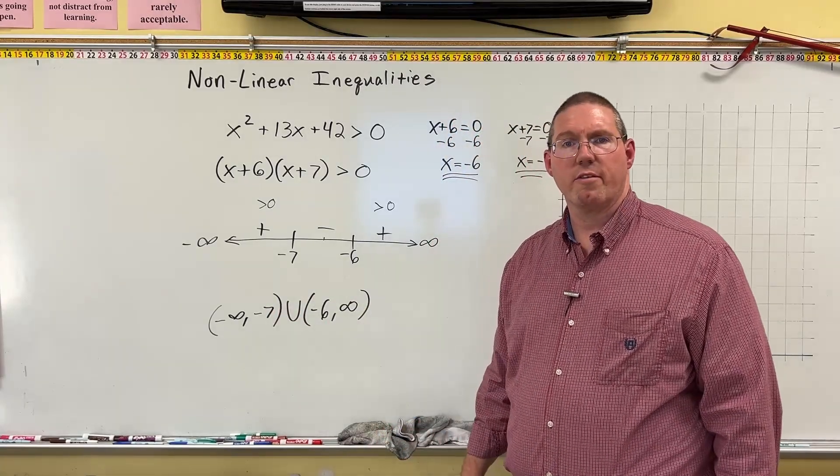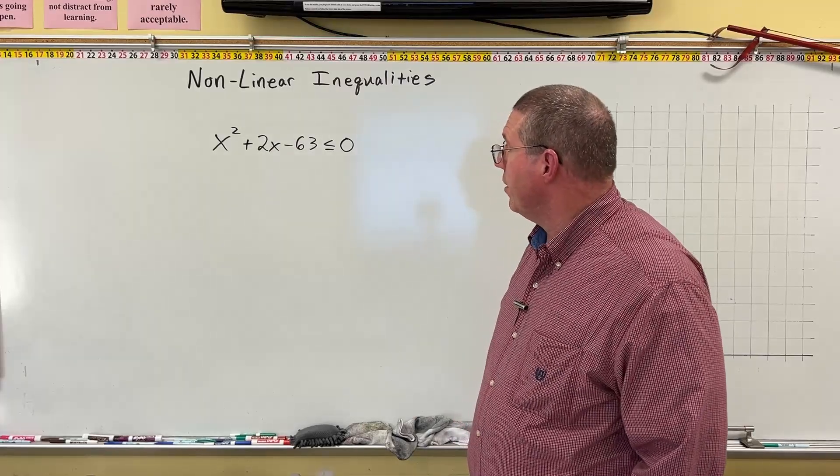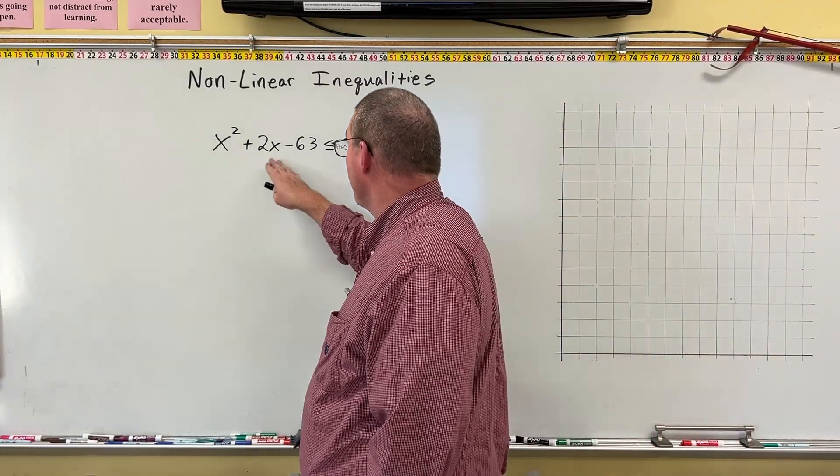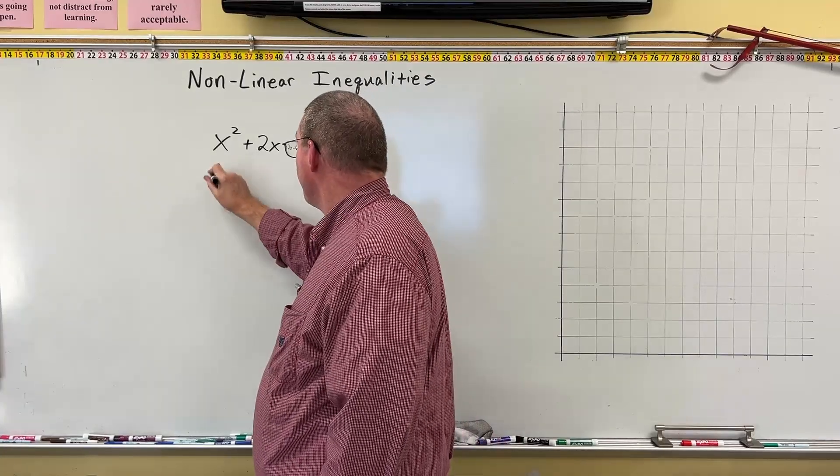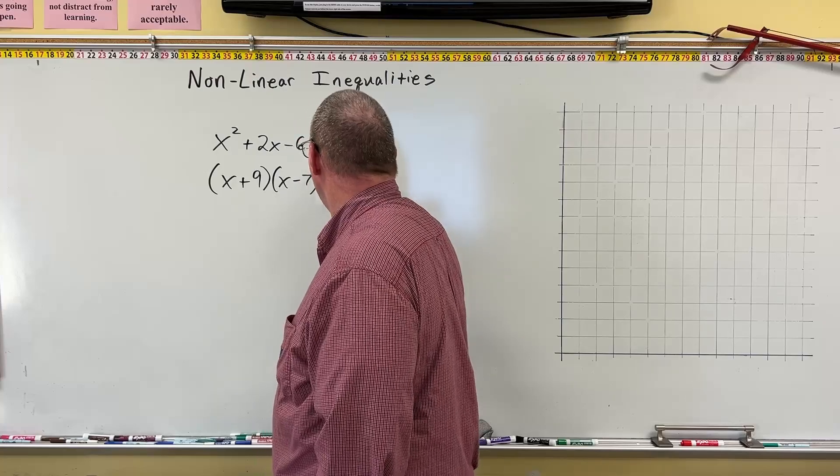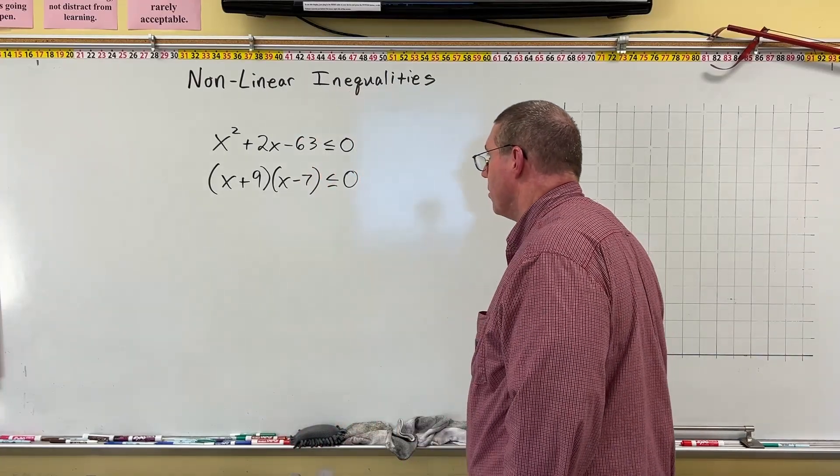Maybe we can try just one more example. This is one that in the last video or a couple videos ago we factored it. So we have x squared plus 2x minus 63. This factors into x plus 9 times x minus 7. And we'll make it less than or equal to 0. So we already have one side equal to 0.